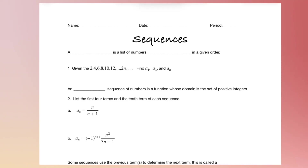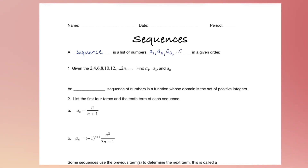Today we're going to learn about sequences. A sequence is a list of numbers such as A1, A2, A3, A4, all the way to An and beyond, in a given order. So those A1, A2 just stand for numbers.